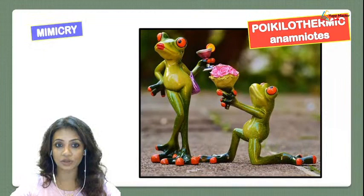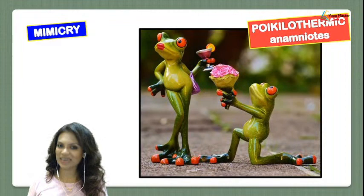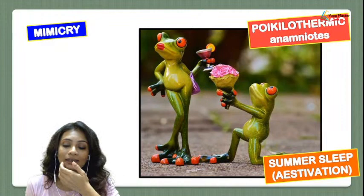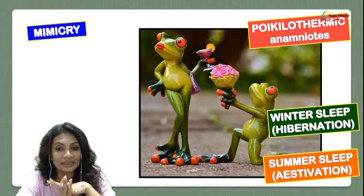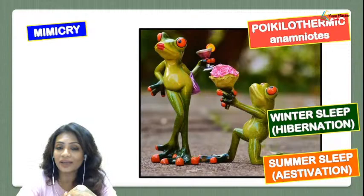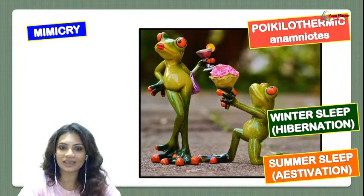Frogs observe mimicry — wherever they are, their body or skin color adapts to the area around them so they can stay away from enemies and protect themselves. During extremes of summer and winter, they go down into the soil and sleep, with their metabolic activities slowing down greatly. Summer sleep is called estivation and winter sleep is called hibernation. These are some general characteristics seen in frogs.